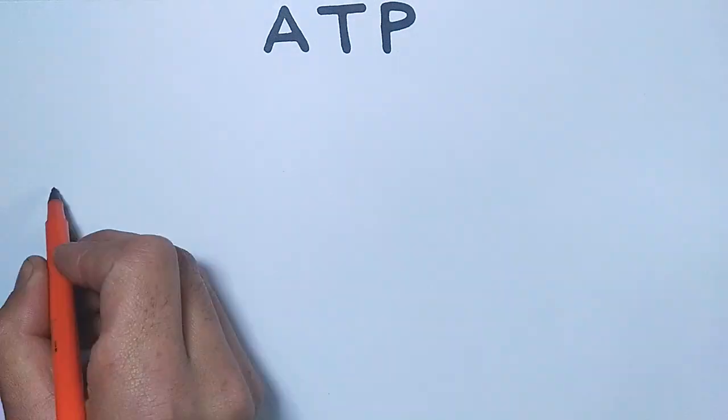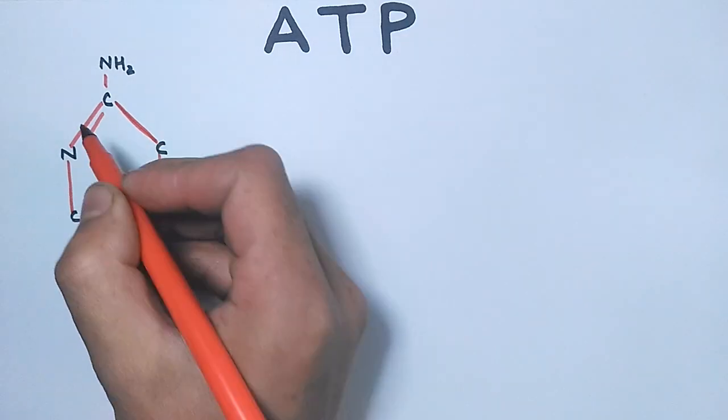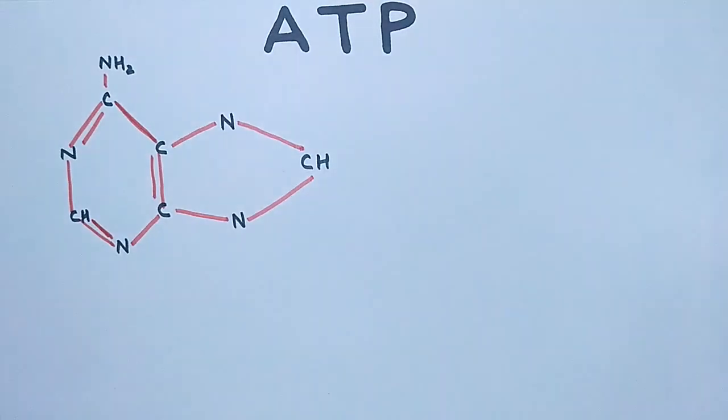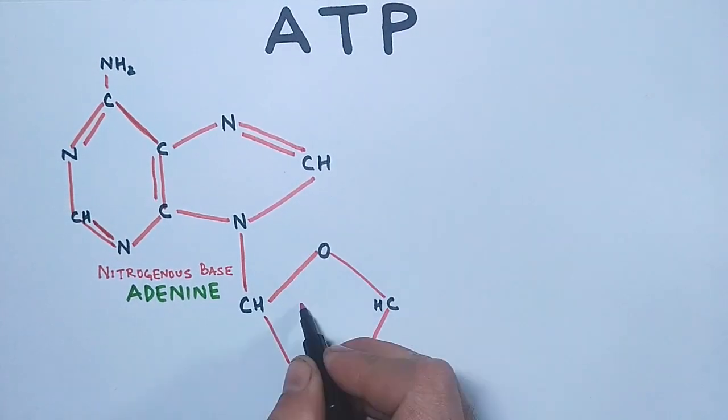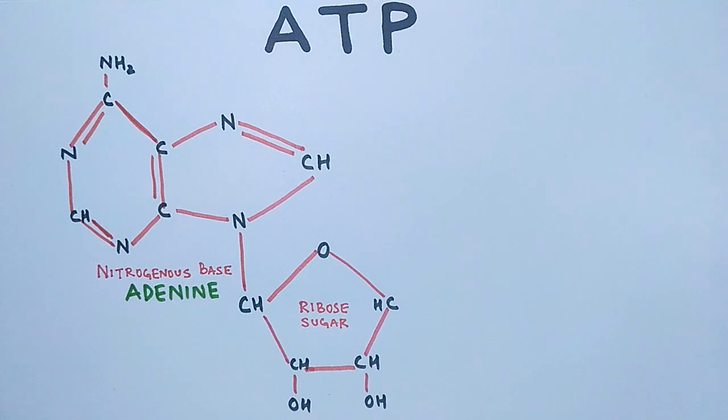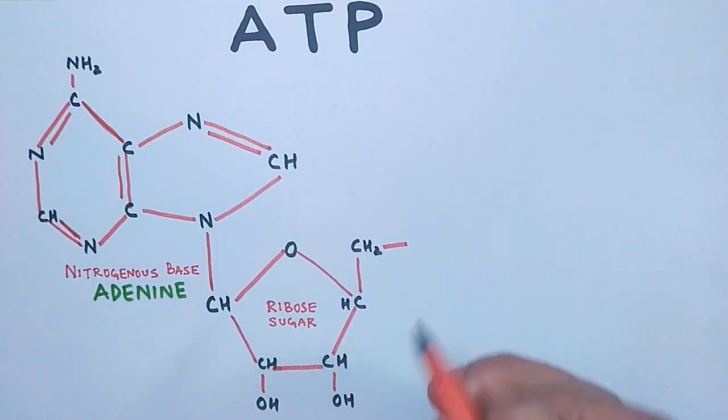When we draw the structure of ATP molecule, we have nucleoside part first - that's adenine nitrogenous base plus ribose sugar. So this forms the nucleoside part. Then to this nucleoside part, a triphosphate is attached - three phosphates in a linear fashion.